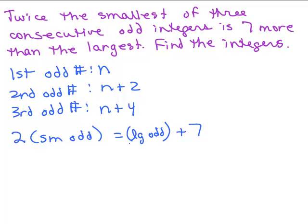All right, so let's see how we define the small odd. We said it was n. So the equation will just be 2n, putting in n for the small odd. The large number is n plus 4, there's the large, plus this 7. So we've got twice the smallest is seven more than the largest odd.